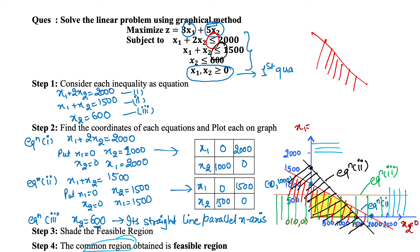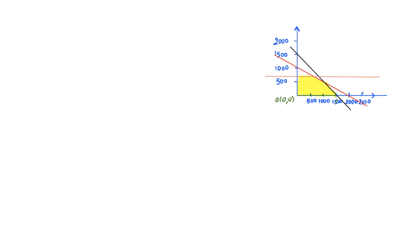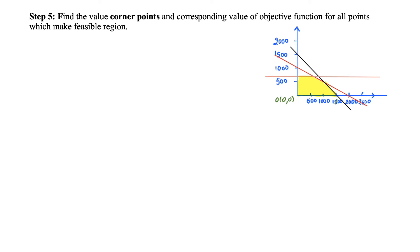Now I have the feasible region. The next step is to find the coordinates of the corner points of the feasible region. This yellow shaded region is my feasible region, so I mark the corner points. The first corner point is the origin O. The second corner point, A, is at (0, 600). Another corner point B is at (1500, 0). Now I need to find the remaining two corner points.